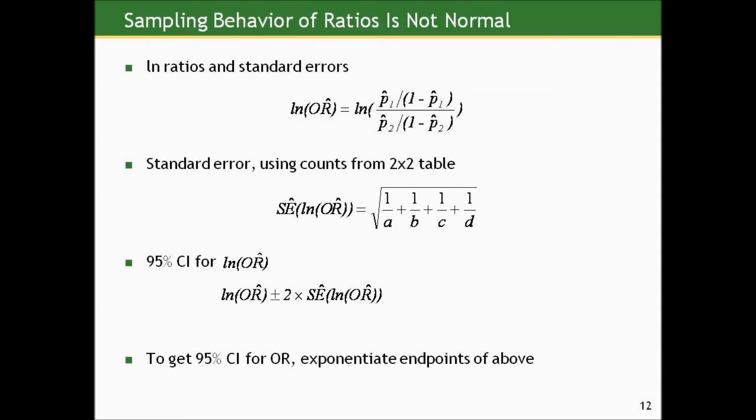And then the 95% confidence interval for the log of this estimated odds ratio is we take that estimated odds ratio and add and subtract two standard errors of the estimated log of the odds ratio. And then we again exponentiate what we've got, the confidence interval for the log of the odds ratio, to get the confidence interval on the odds ratio scale.